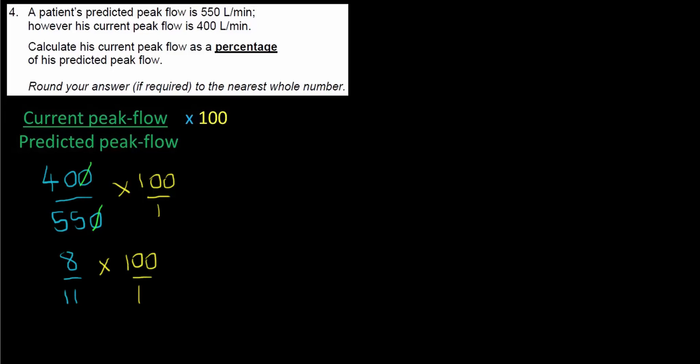Now, I cannot simplify any more than that. So I will now do top times top, which is 800, over bottom times bottom, which is 11. I cannot simplify that. So again, I imagine in my mind's eye pushing it over. And I'm going to do 11 into 800.